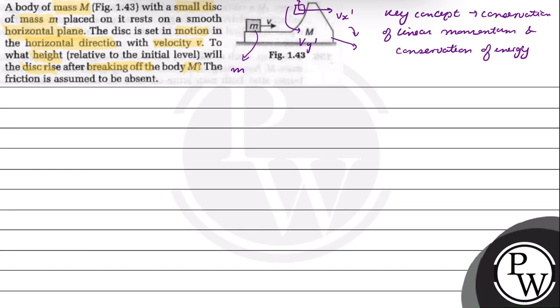From conservation of momentum, initial momentum of the body, that is small mv, will be equal to the final momentum of the body, that is (m+M)vx-dash. So vx-dash value equals mv divided by (m+M).